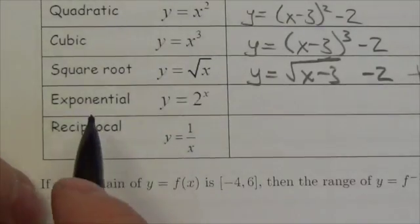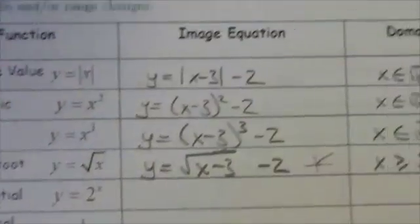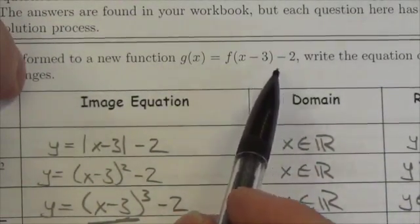Hi everyone. This question asks me to apply a set of transformations to the exponential function. Now the transformations are expressed in this function here, f of x minus 3 minus 2.